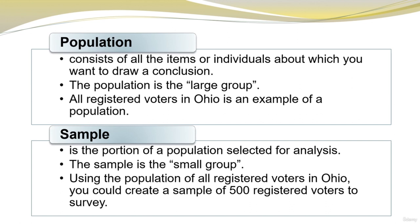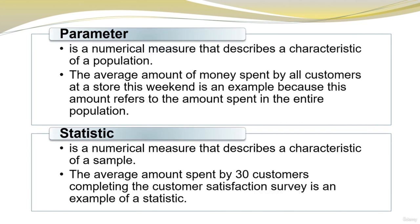A population consists of all the items or individuals about which you want to draw a conclusion — the population is the large group. All registered voters in Ohio is an example of a population. A sample is the portion of a population selected for analysis — the small group. You could create a sample of 500 registered voters from that population to survey. A parameter is a numerical measure that describes a characteristic of a population, while a statistic is a numerical measure that describes a characteristic of a sample. The average amount spent by 30 customers completing a satisfaction survey is an example of a statistic.